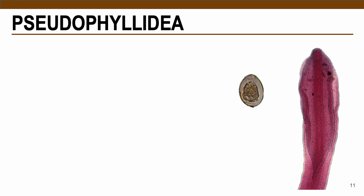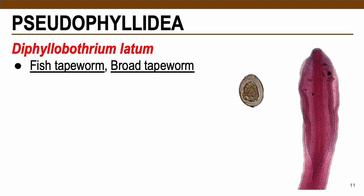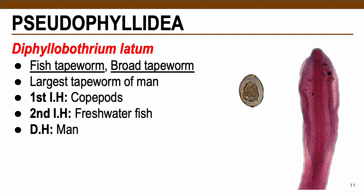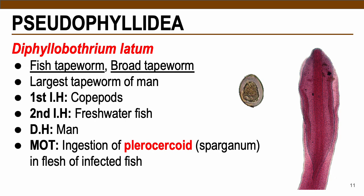There are only two parasites under your Pseudophyllidea. The first is Diphyllobothrium latum, or D. latum — the fish tapeworm and broad tapeworm. This is the largest tapeworm of man. The first intermediate host is copepods — small microscopic animals present in water — and the second is freshwater fish. The definitive host is humans, who are infected by ingestion of the plerocercoid, also known as the sparganum, which is present in the flesh or tissues of freshwater fish.